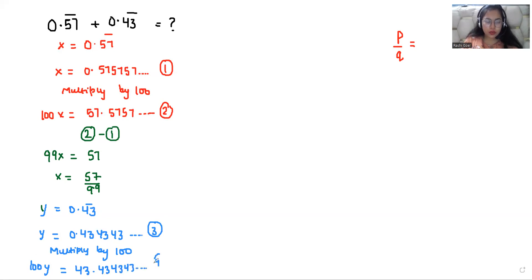This is equation number four. If I subtract four minus three, I got 100Y minus Y is 99Y which equals 43 minus 0 is 43 and the rest will subtract. So Y equals 43 by 99.